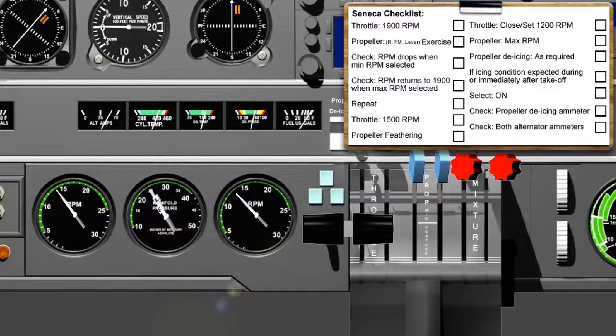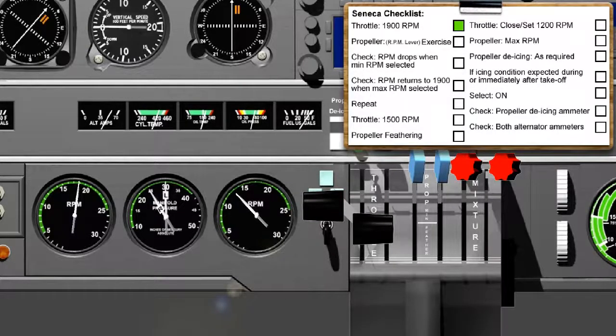The first check is a part of the power check. The remainder forms part of the before takeoff check. Here, we've highlighted the particular parts of the checklist that we are concerned with. Throttle, 1900 RPM. Be aware that you don't really want to use any more RPM than necessary.